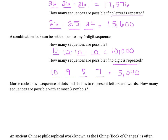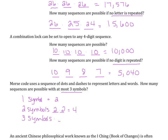Morse code uses a sequence of dots and dashes — two options — to represent letters and words. How many sequences are possible with at most three symbols? If we have one symbol, we have two options. If we have two symbols, we have two times two, so four options. With three symbols, we have two times two times two, so eight options. Since we want at most three symbols, we add these all together to get a total of 14 options for sequencing with Morse code.